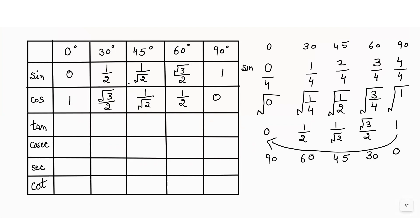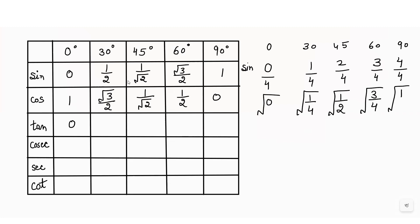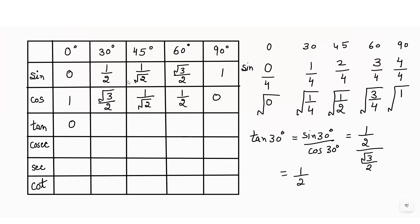Now we need to find the values for tan. Tan theta is always equal to sin theta over cos theta. For tan 0°: sin 0 / cos 0 = 0/1 = 0. For tan 30°: sin 30 / cos 30 = (1/2) / (√3/2) = 1/2 × 2/√3 = 1/√3.